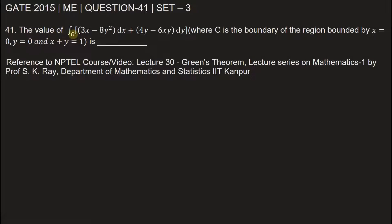The value of the line integral on curve C: 3x minus 8y squared dx plus 4y minus 6xy dy, where C is the boundary of the region bounded by x equals 0, y equals 0, and x plus y equals 1.